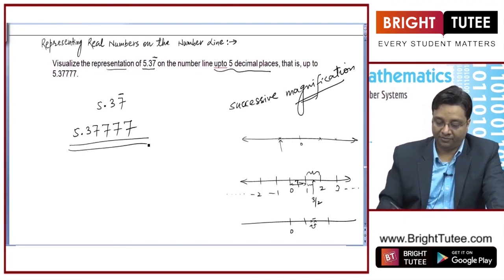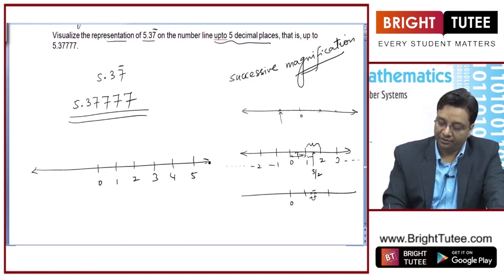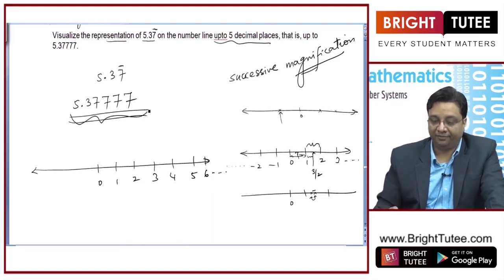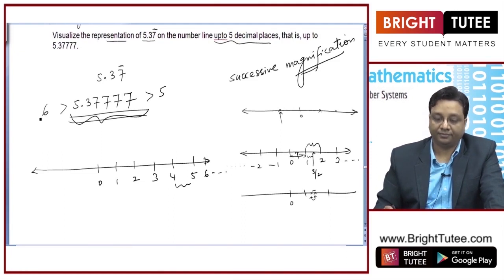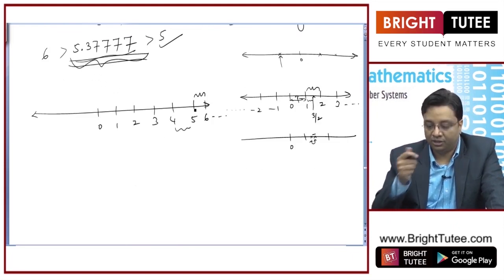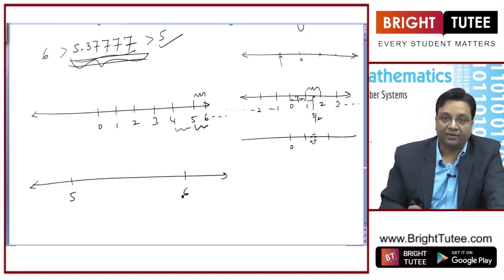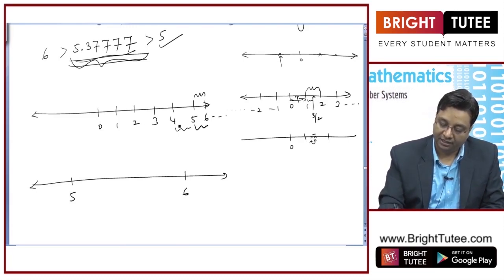For the number 5.37777, consider the number line: 0, 1, 2, 3, 4, 5, 6, and so on. Where will 5.37777 lie? It will not lie between 4 and 5 because it is greater than 5 and lesser than 6. So it definitely lies between 5 and 6. Successive magnification says: take a magnifying glass and look at this interval only. This interval between 5 and 6 will look like this when magnified.